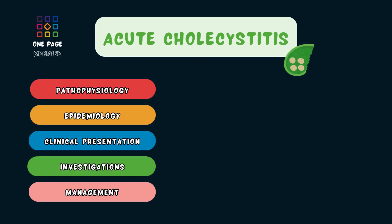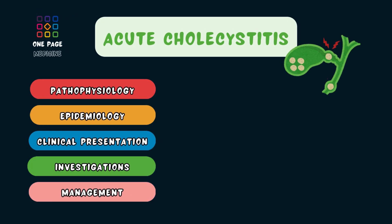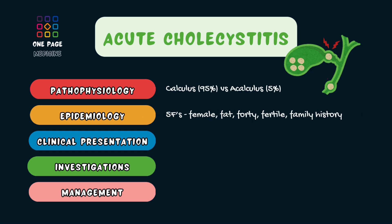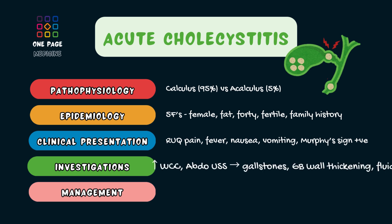To summarize: acute cholecystitis refers to inflammation of the gallbladder and is mostly caused by gallstones. The risk factors include the five Fs — female, fat, 40, fertile, and those with a family history. The hallmark features are right upper quadrant pain, a fever, and a positive Murphy's sign on examination. Investigations will show an elevated white cell count and an abdominal ultrasound demonstrating gallstones, gallbladder wall thickening, and pericholecystic fluid.